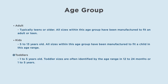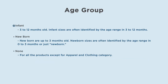Toddlers — 1 to 5 years old. Toddler sizes are often identified by the age range in 12 to 24 months, or 1 to 5 years. Infant — 3 to 12 months old. Infant sizes are often identified by the age range in 3 to 12 months. Newborn — up to 3 months old. Newborn sizes are often identified by the age range in 0 to 3 months, or just newborn.